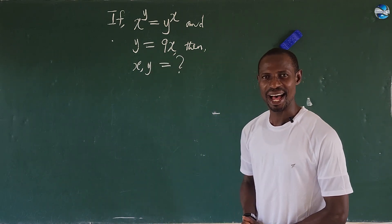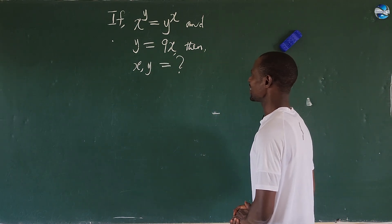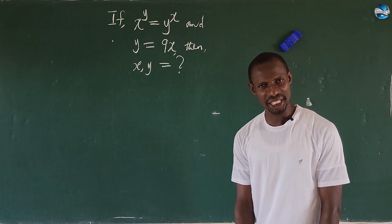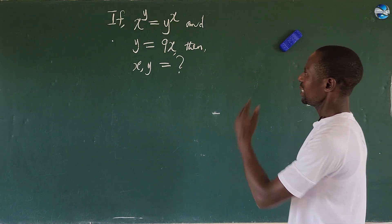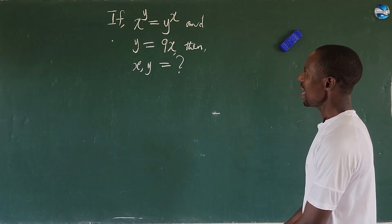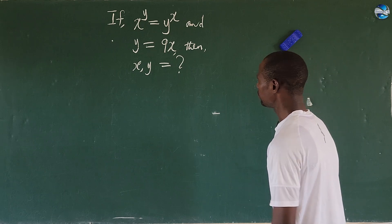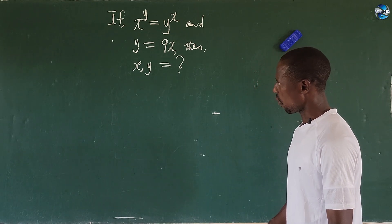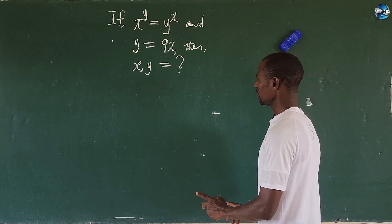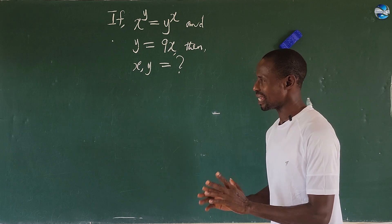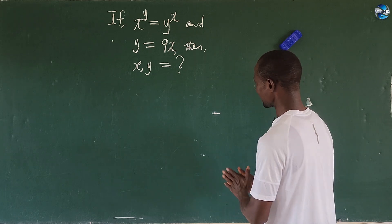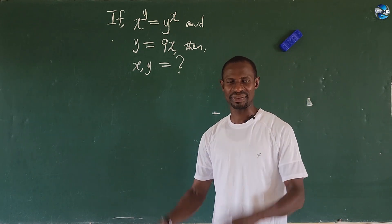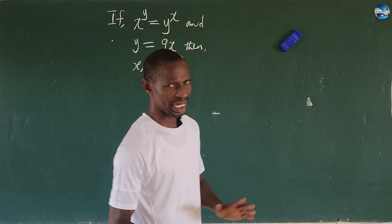Hi, welcome to today's class. Today we have this nice equation before us. The question is: if x to the power of y is equal to y to the power of x, and y is given to be 9x — that is y equals 9x — then what is the value of x and y that will satisfy these two equations?